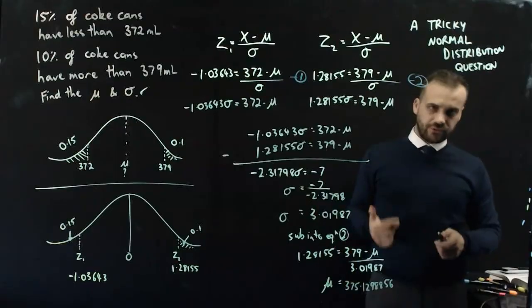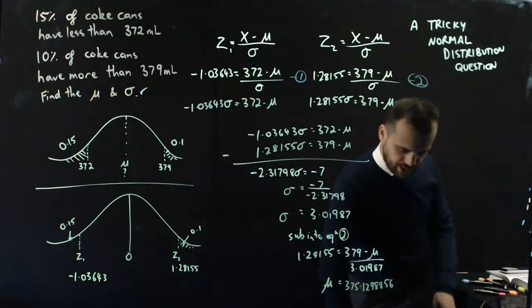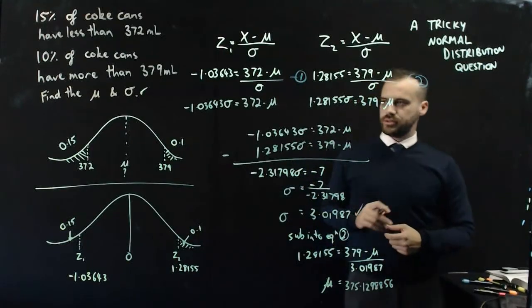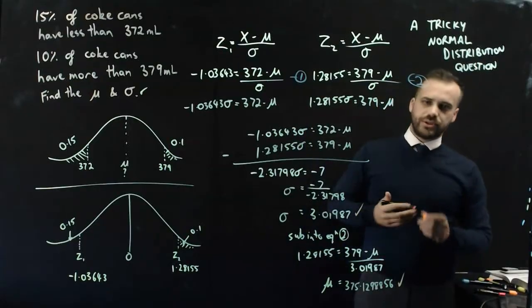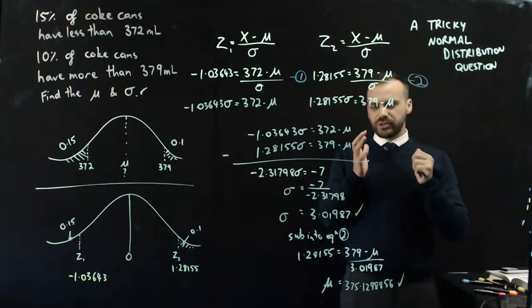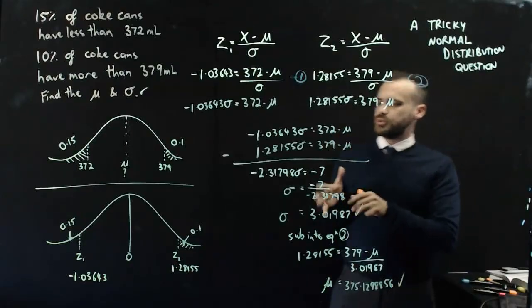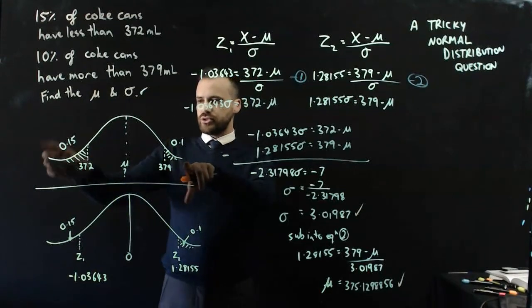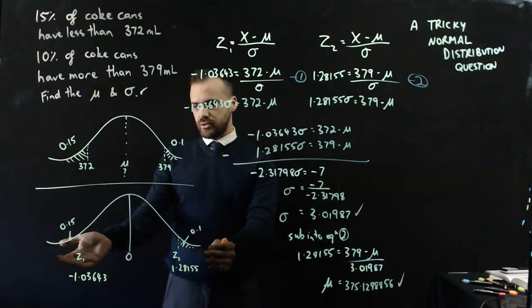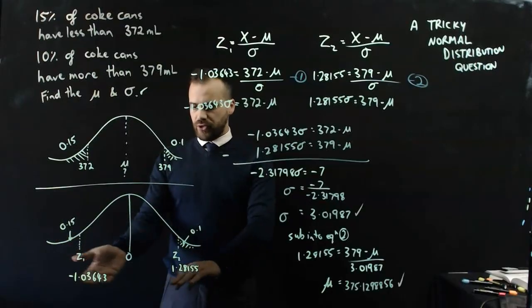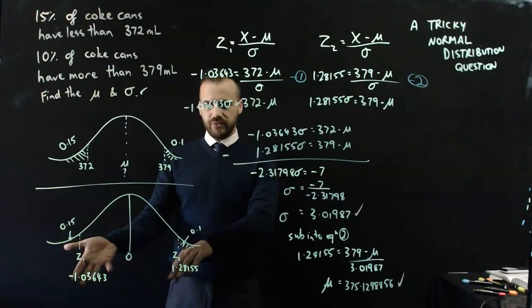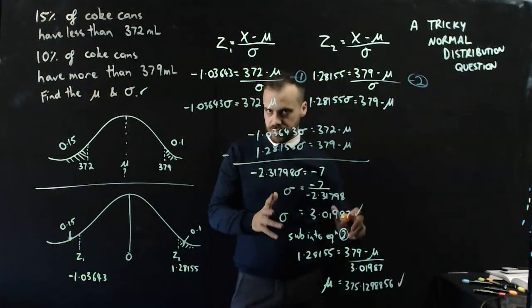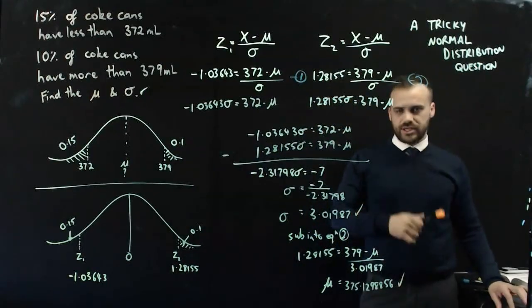They advertise that they're 375 ml, so it looks like we're doing well here. I found the standard deviation and I found the mean and that's what the question was asking us to do. Really a bit of a tricky question here but what you just need to understand is that if you can convert whatever normal distribution you have into a standard normal distribution and then find those z-scores using your inverse normal distribution functions then you can use these equations to work backwards from there. Very tricky question.